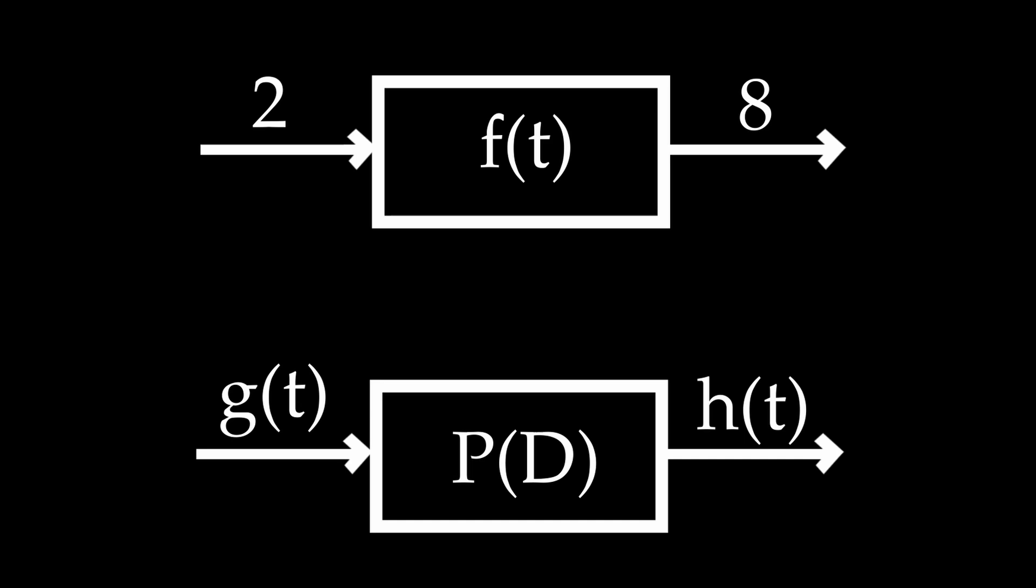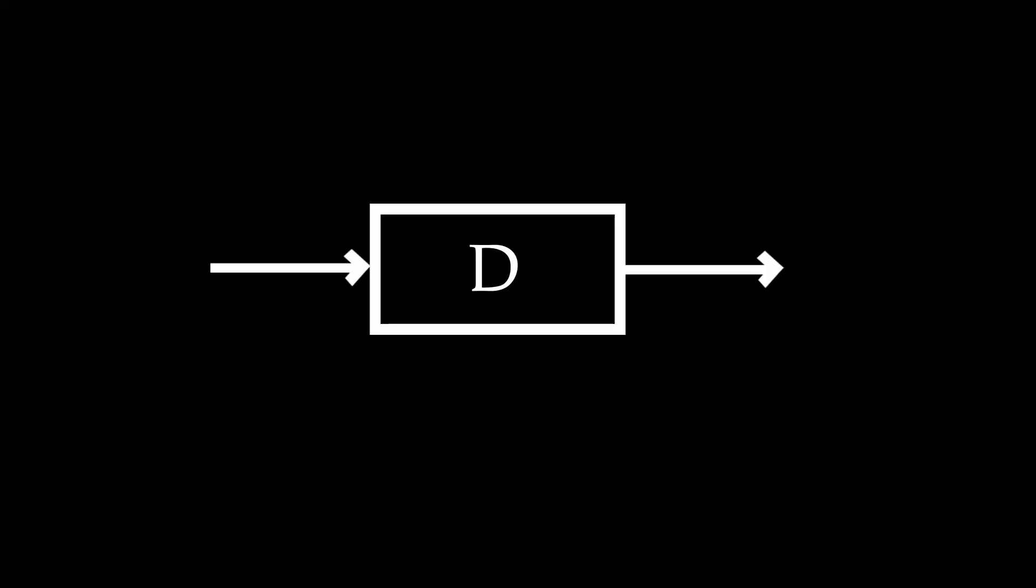You already know an operator. The derivative itself is an operator. It takes in t squared and gives you 2t for example. So in general for solving this, we see that these systems are represented by p of d y